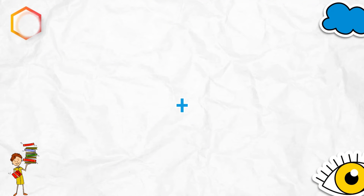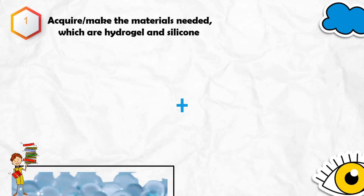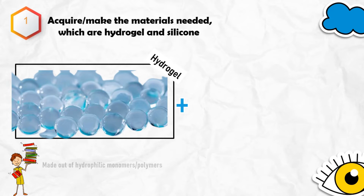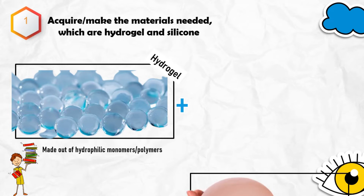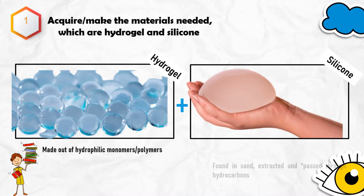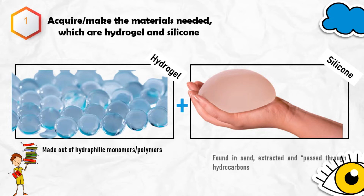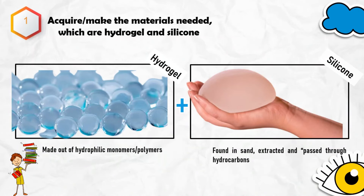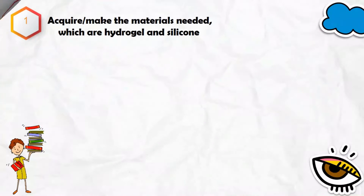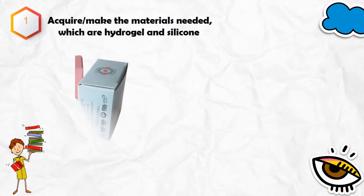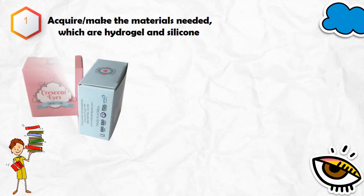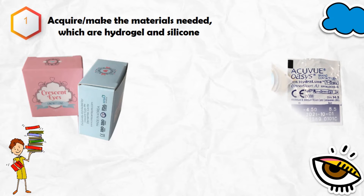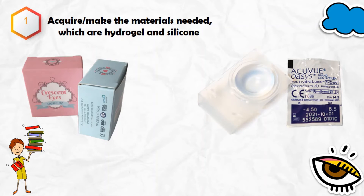Firstly, we need to acquire or make the materials needed, which are hydrogel and silicone. Hydrogels are made out of hydrophilic monomers or out of polymers that are either synthetic or natural, while silicone is found in sand and when extracted and passed through hydrocarbons, silicone is made and formed. Other raw materials include cardboard, plastic foil, aluminum foil, and saline solution in which the contact lenses are encased.